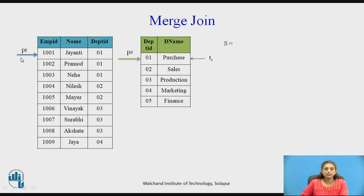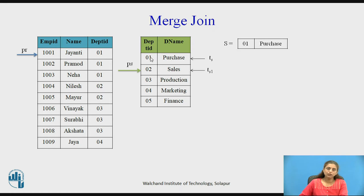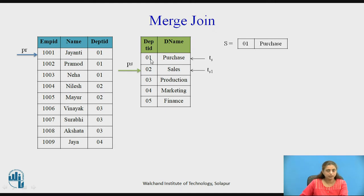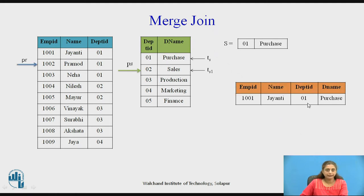As per the algorithm, PR and PS are pointing to the first tuple. TS is pointing to the first tuple taken into the set. The first value, 01, has been taken. The next pointer TS1 points to the next record of S. We have to bring all records of relation S having the same value. Since department id is a primary key for the department relation, we will get only one record in set S — 01 and 02 are not matching. So S will have only a single record. We then compare this record of R with S. The first record has department id 1, and S also has 1, so this record is added to the result.